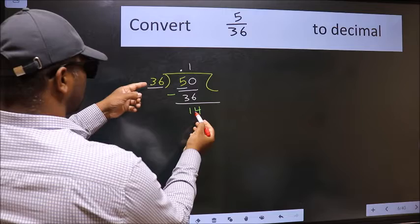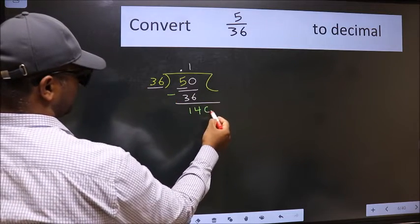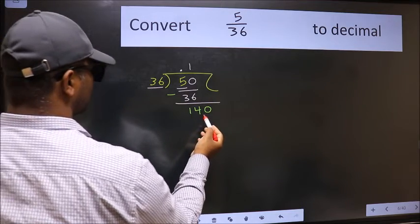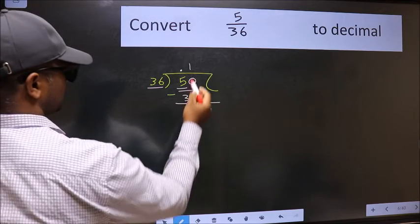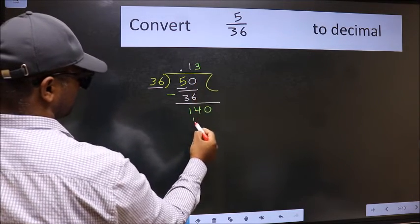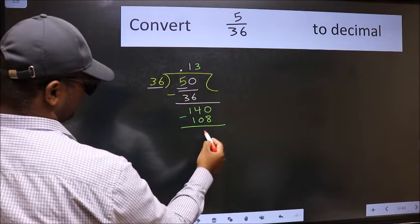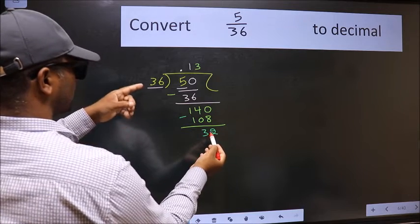14 is smaller than 36 and we already have the decimal, so directly take 0. So 140. A number close to 140 in the 36 table is 36 threes, which is 108. Now we subtract and get 32.